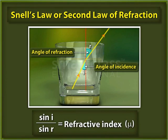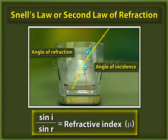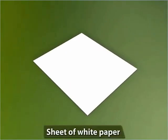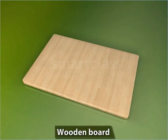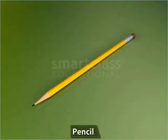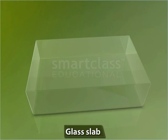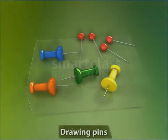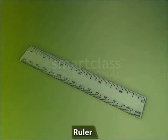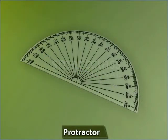Let us now try to verify Snell's Law with the help of a simple activity. For the activity, take a sheet of white paper, a wooden board, a pencil, a glass slab, eight drawing pins, a ruler, and a protractor.